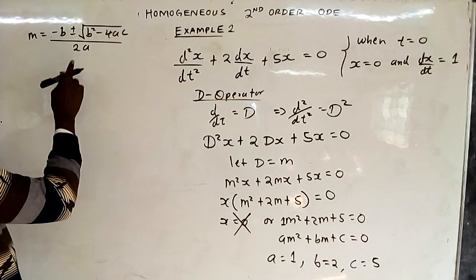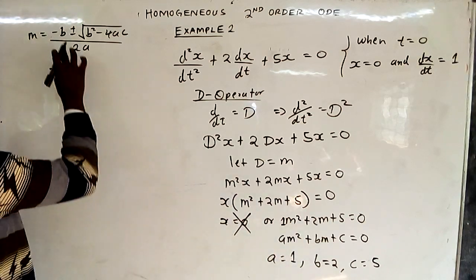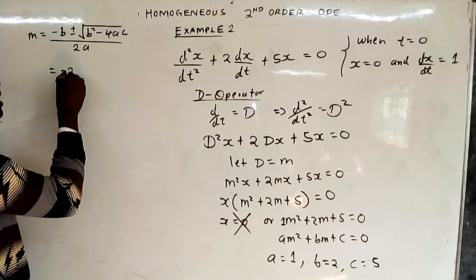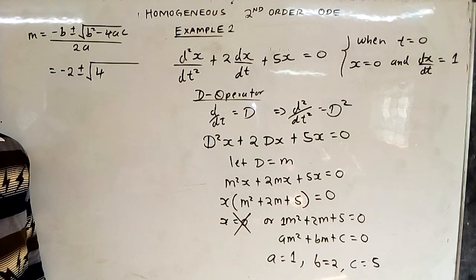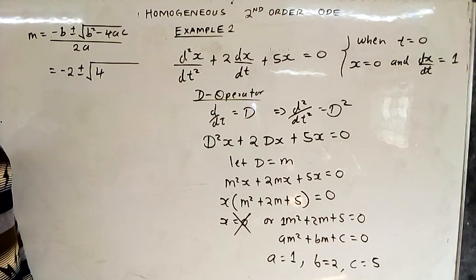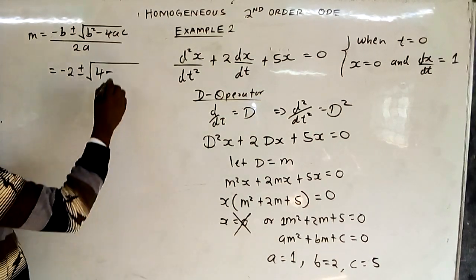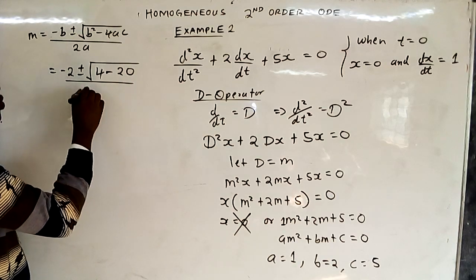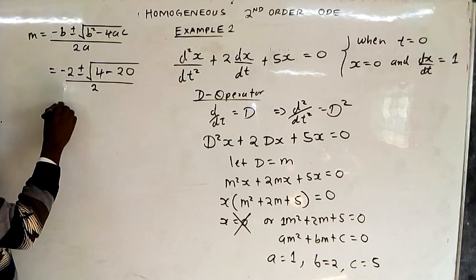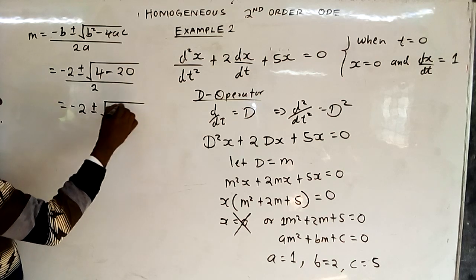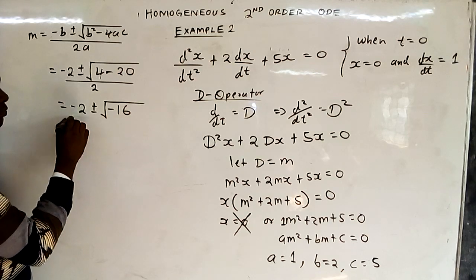Substituting the values: b equals 2, so negative b is negative 2. Then b squared is negative 2 squared which equals 4. Minus 4ac: 4 times 1 times 5 is 20, so it is minus 20. The denominator is 2 times 1 which is 2. So we get negative 2 plus or minus square root of negative 16, since 4 minus 20 is negative 16, all over 2.